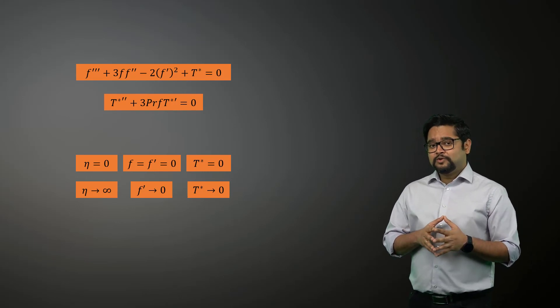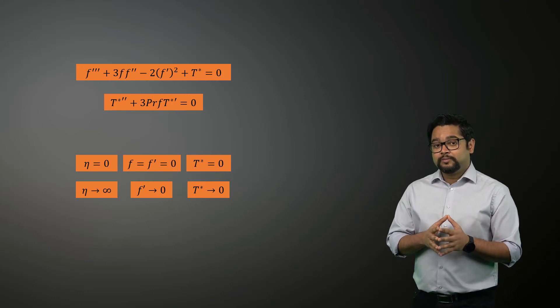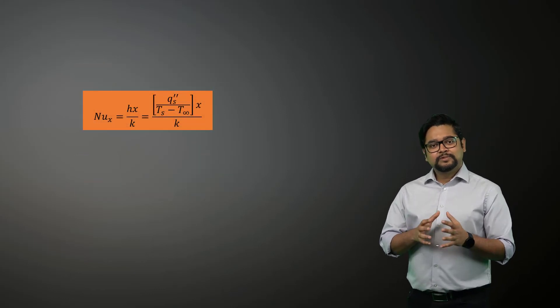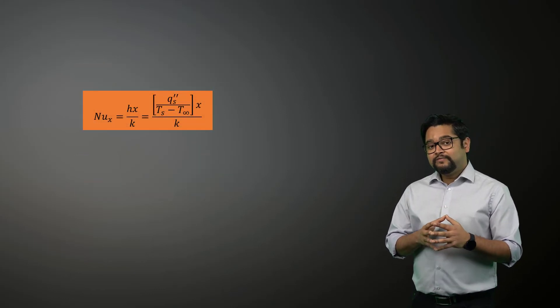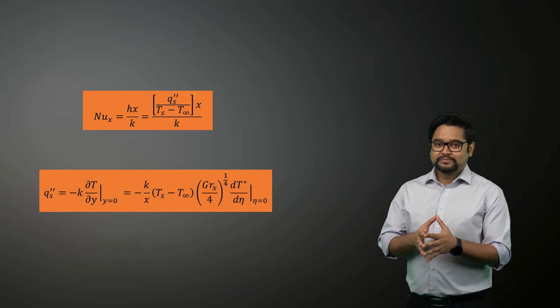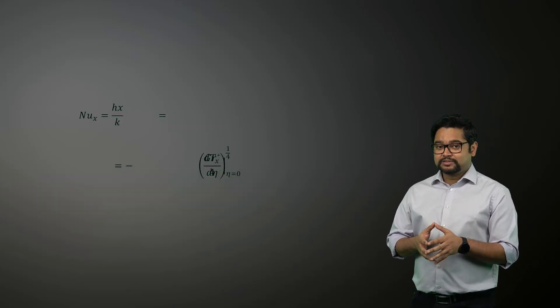From Newton's law of cooling for the local convection coefficient h, the local Nusselt number can be expressed using this expression. Now using Fourier's law, we can obtain the heat flux as shown here. And therefore, we can rewrite the Nusselt number expression like this.